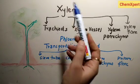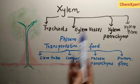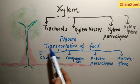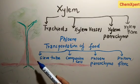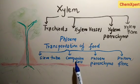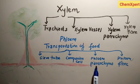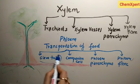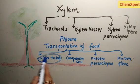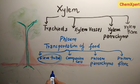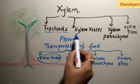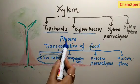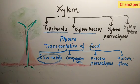As xylem is responsible for transportation of water and minerals, phloem is the component responsible for transportation of food. The different components of phloem are sieve tube, companion cell, phloem parenchyma, and phloem fiber. Out of these, only the sieve tubes are the conducting elements in phloem. In xylem, tracheids and xylem vessels are responsible for conduction, while in phloem, only sieve tubes form the conducting element.